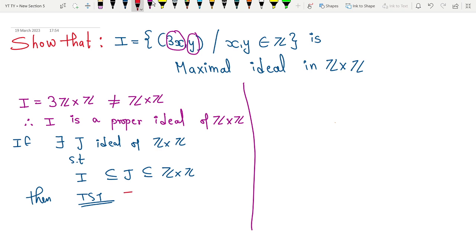Then I need to show that I or this J is either equal to Z×Z. Hence it becomes a maximal ideal. If there exists J, then J either must be equal to I or it is same as Z×Z. So I start with this J. Suppose there exists some J.